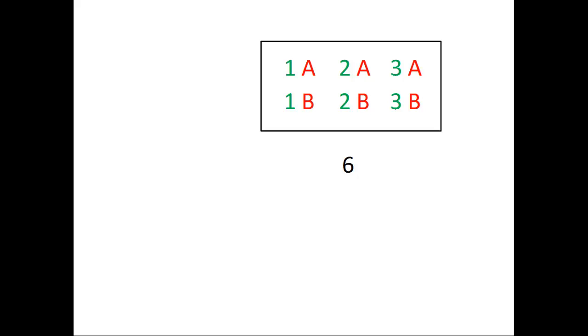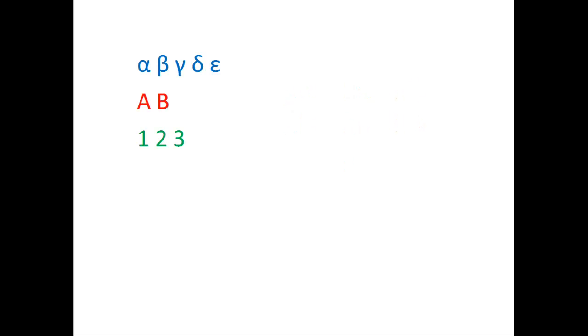Now what if we had two groups from before, and now a third group, five symbols? Well, if we had chosen alpha first, we could choose either A or B. If we choose A, we still have the possibilities 1, 2, or 3.